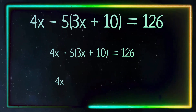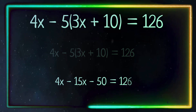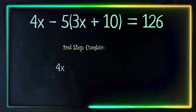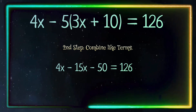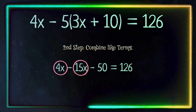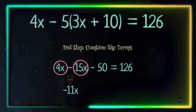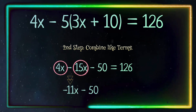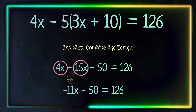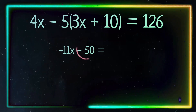4x minus 15x minus 50 equals 126. The next step is to combine like terms: 4x and negative 15x, which equals negative 11x. We are left with negative 11x minus 50 equals 126. Now we have to move the negative 50.